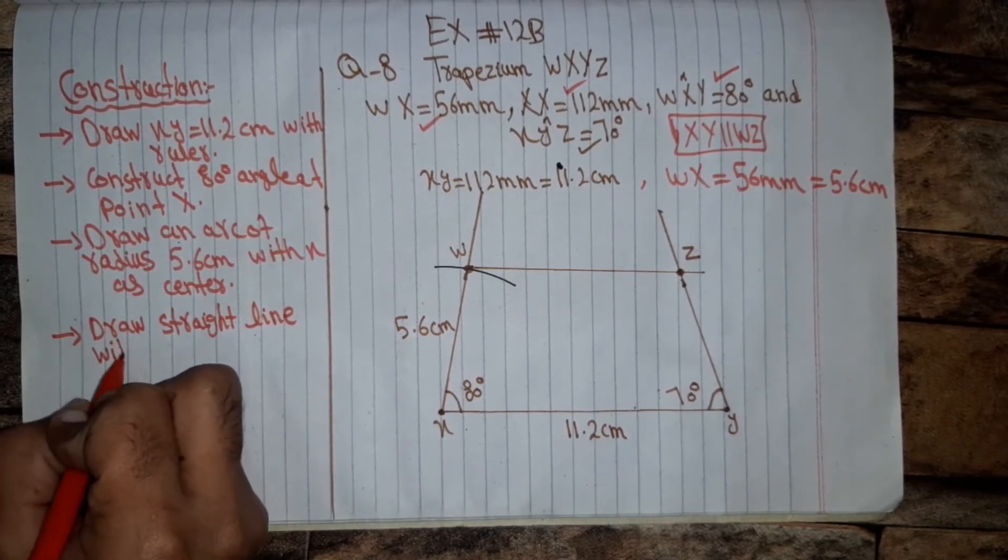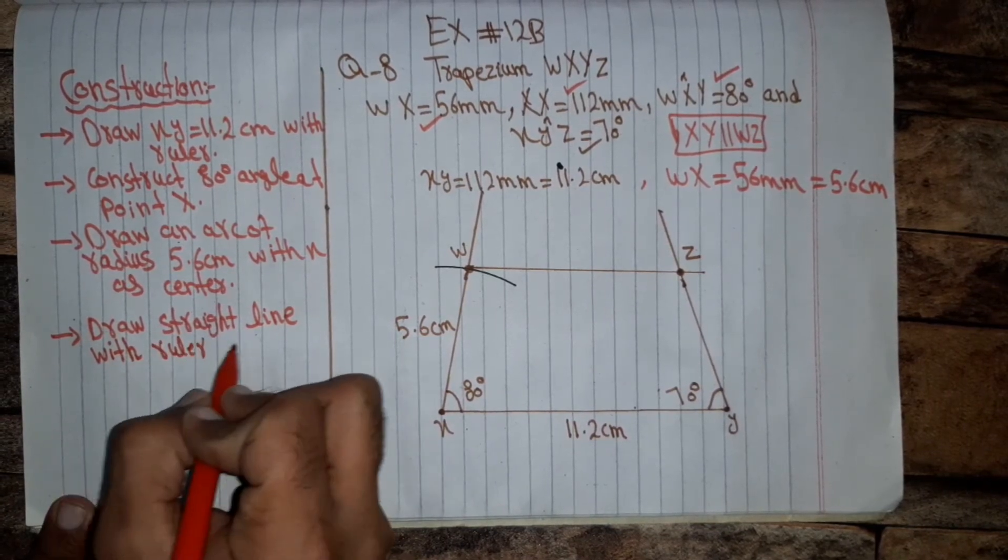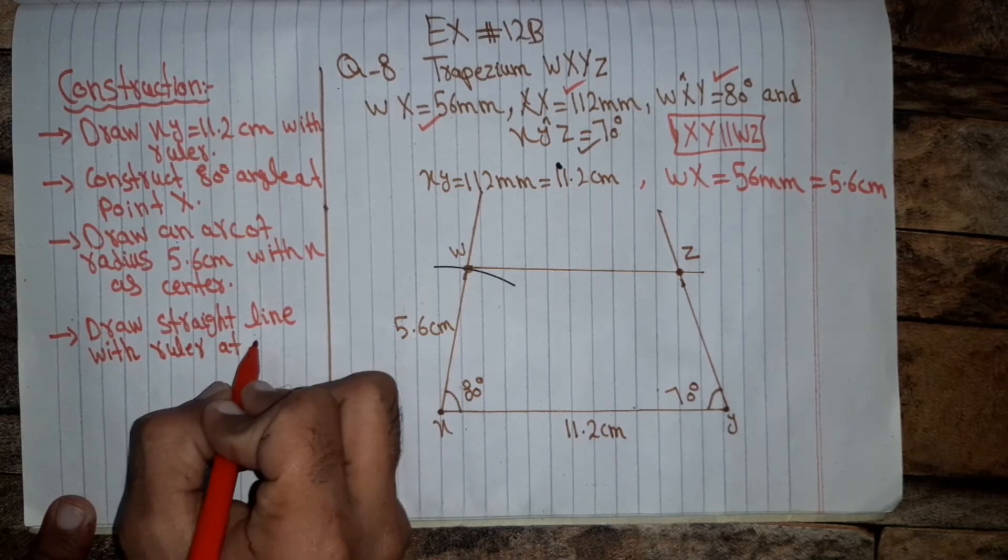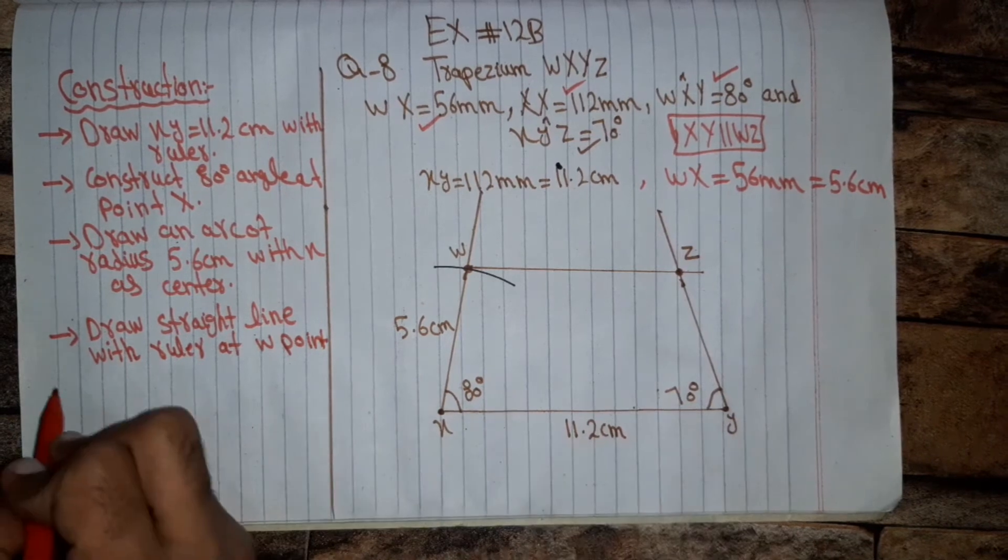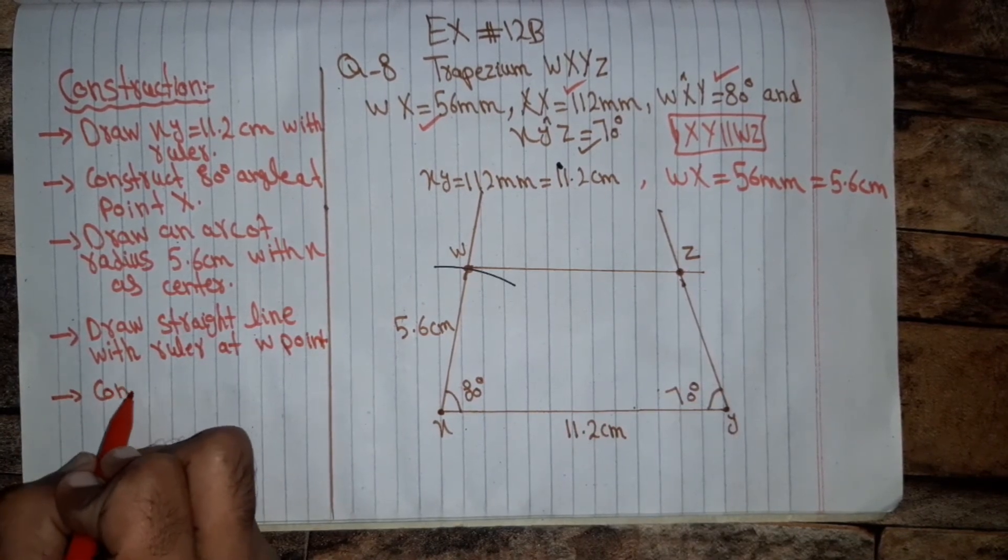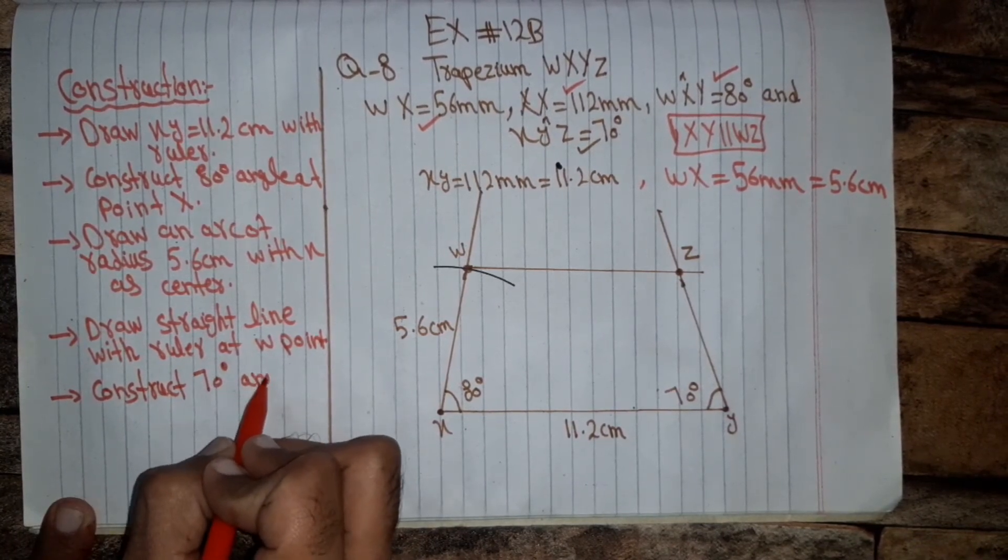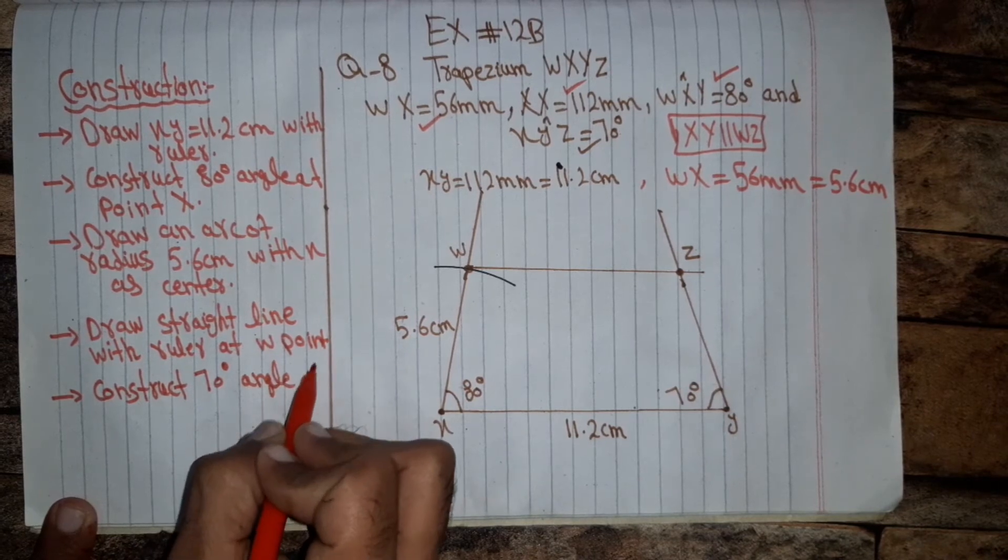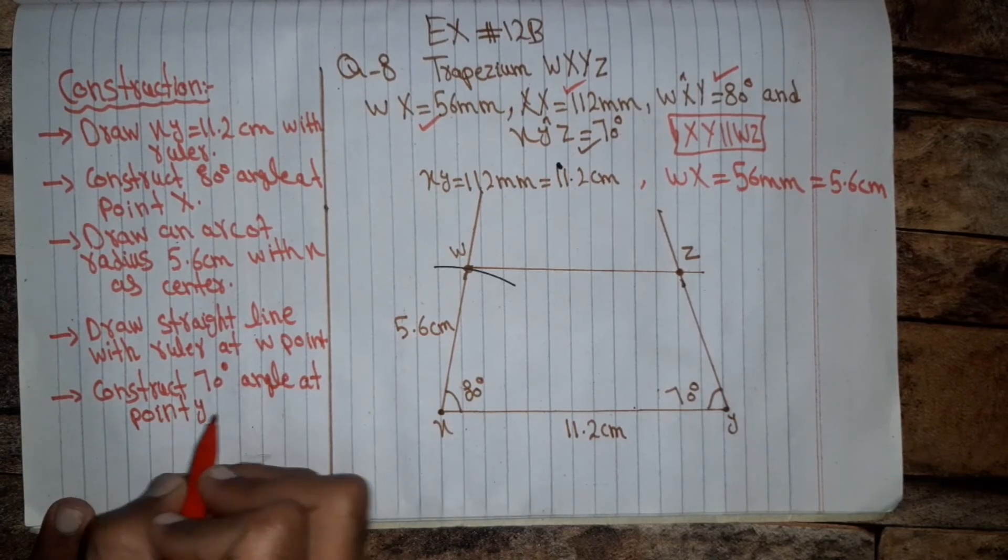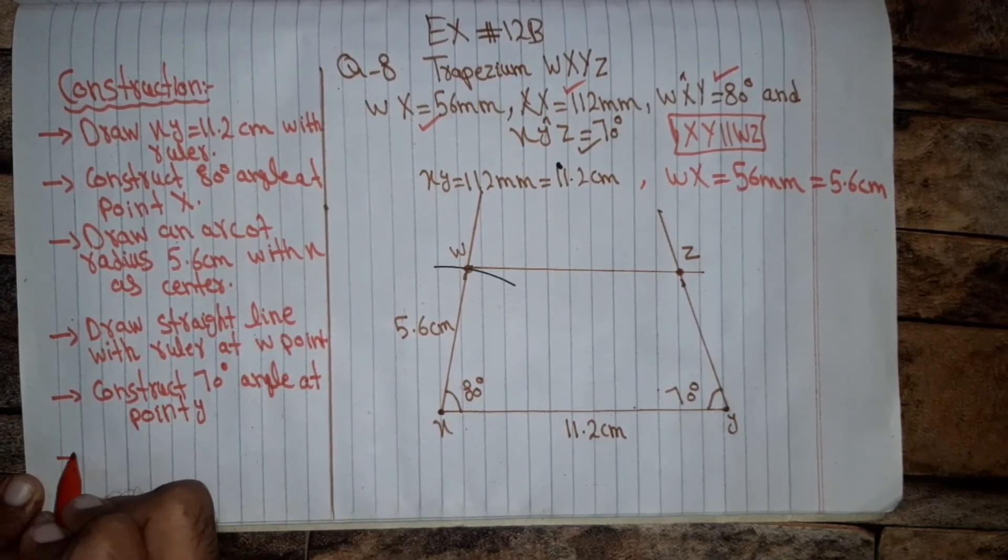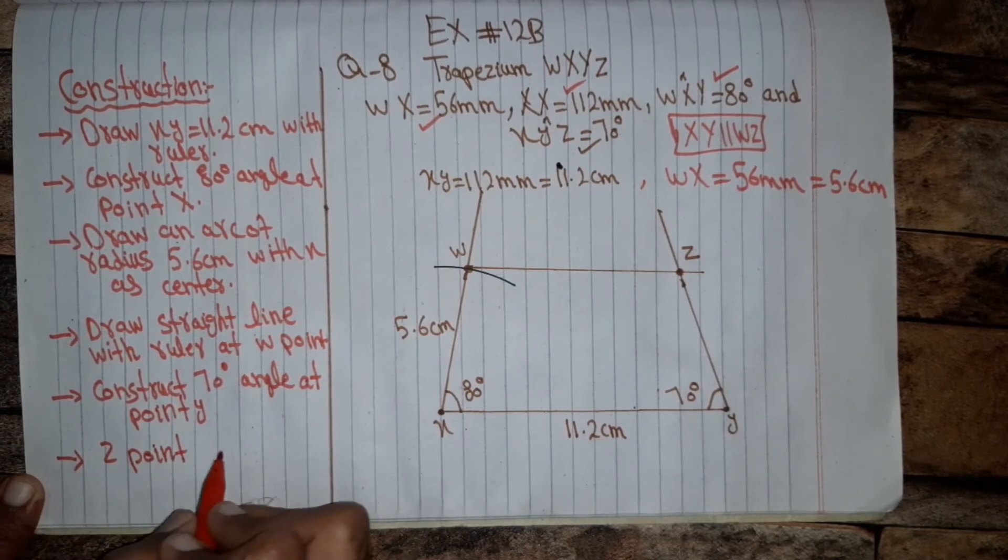Draw straight line with rulers at W point and then construct seventy degree angle at point Y. Z point is obtained.